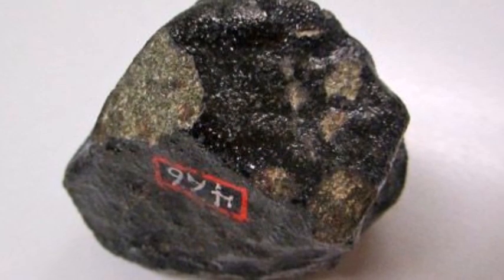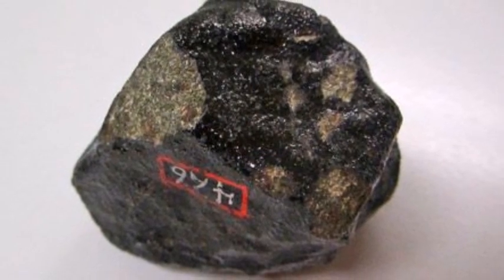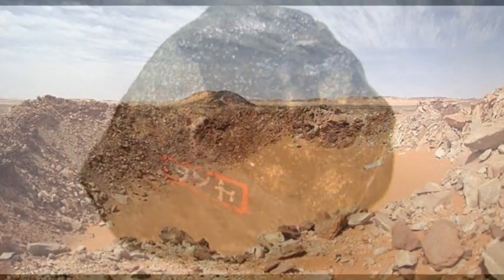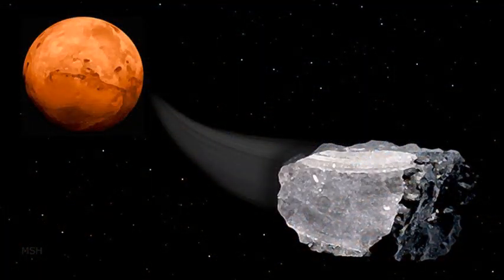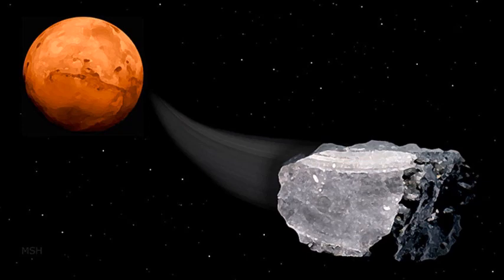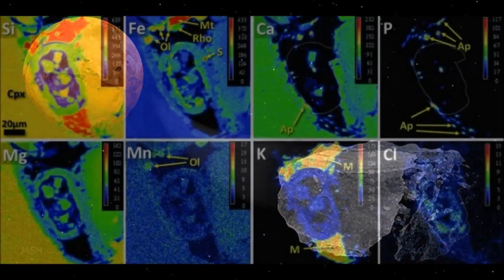Nakla is a 1.38 billion year old Martian meteorite that fell to Earth on June 28, 1911 in Egypt. The rock was expelled from the surface of Mars about 11 million years ago before crashing on the surface of our planet.